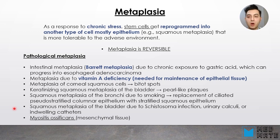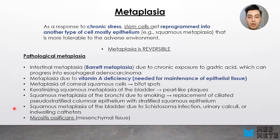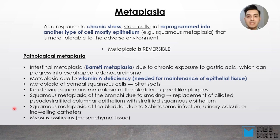Examples of pathological metaplasia include intestinal metaplasia. A classic example is Barrett metaplasia, which is due to chronic exposure to gastric acid and can progress into esophageal adenocarcinoma if the exposure is not relieved. Another example is metaplasia of corneal squamous cells, related to vitamin A deficiency. Vitamin A is very important for epithelial cell maintenance, and its deficiency can lead to metaplasia of different tissues. Another example is keratinizing squamous epithelium of the bladder, named pearl-like plaques.